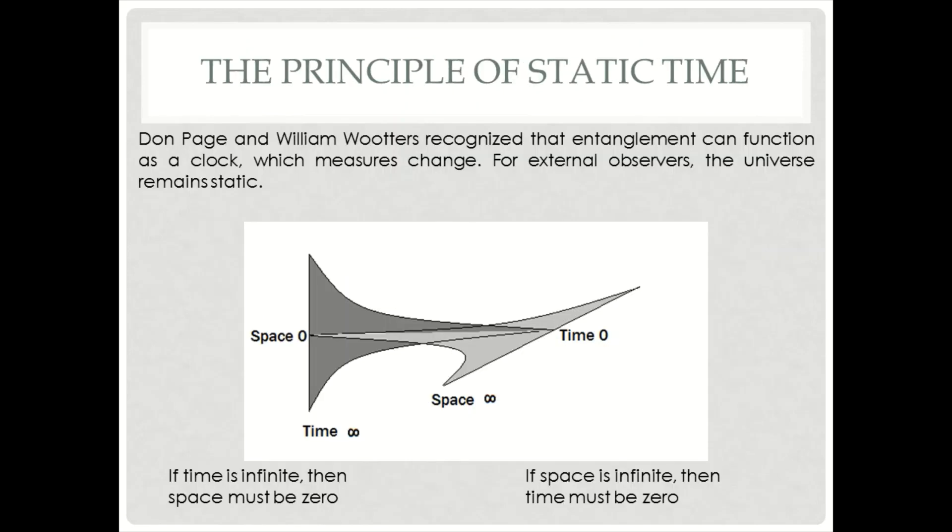The principle of static time has been proposed in the 1960s. It shows that looking from the outside the cosmos doesn't change, it is static. Differences in energy states evolve locally via entanglement. For example, when space reduces to zero in some regions shown on the left, it must expand to infinity somewhere else, shown on the right.